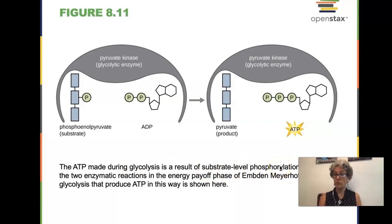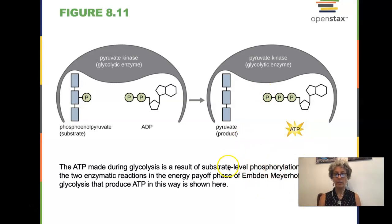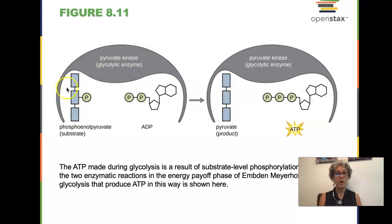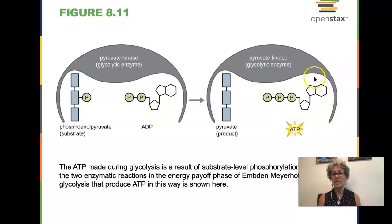Substrate level phosphorylation: an enzyme will pop the phosphate off of a substrate and put it onto ADP to create ATP. That's how we end up with the final three-carbon product of pyruvate and generate the ATP.